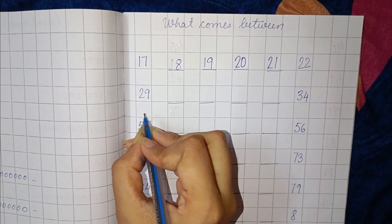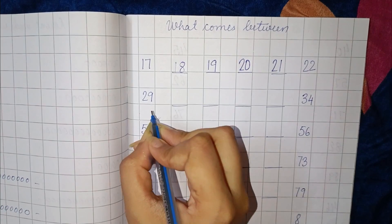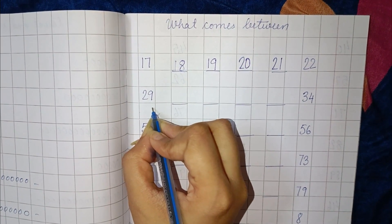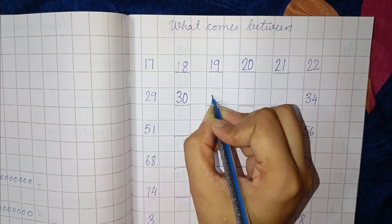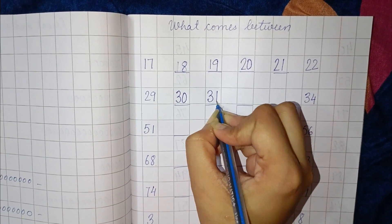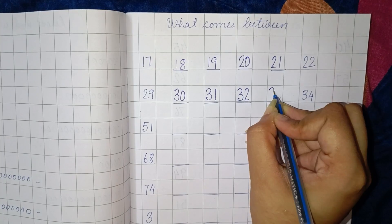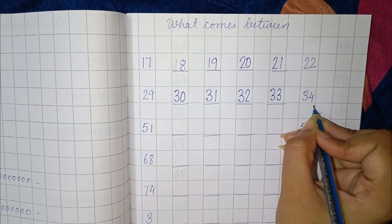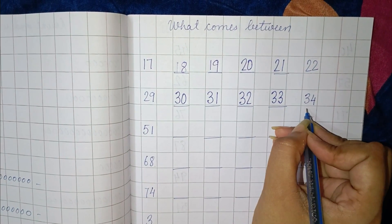Next we have to find numbers between 29 and 34. So first here is 29, now here will be 30, 31, 32, 33, and 34. So these are numbers between 29 and 34.